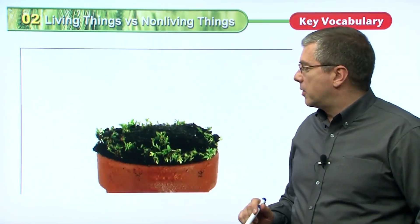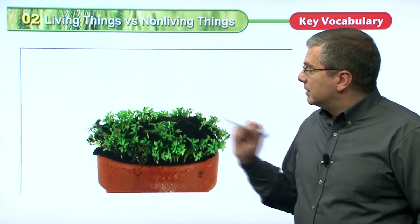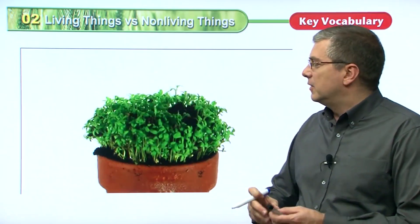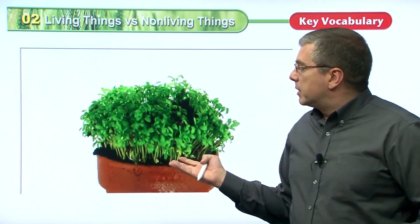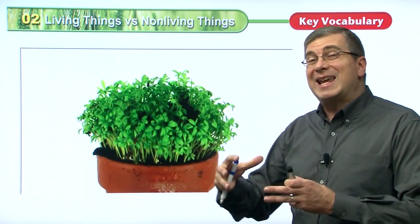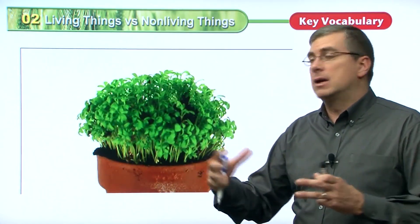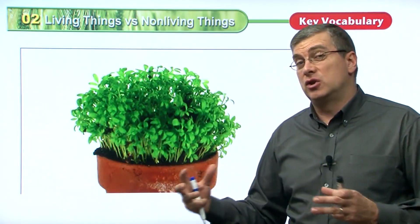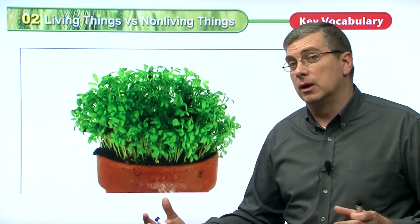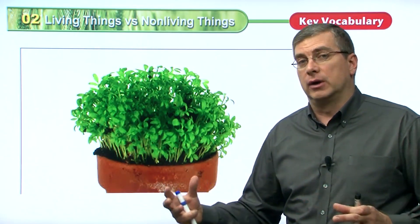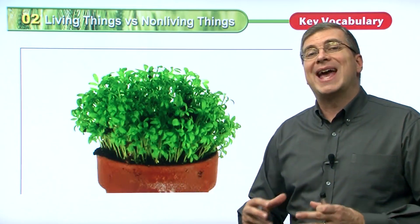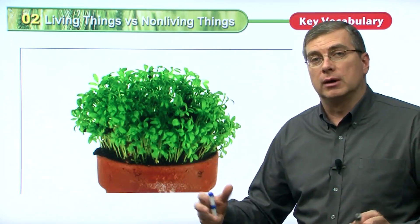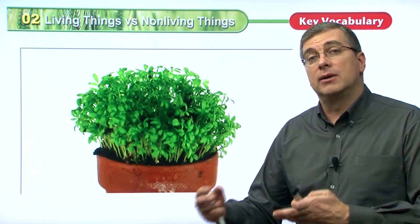Let's take a look at these plants planted in this pot and how they grow. They're growing very quickly — of course this is time-lapse photography, taken over a long period of time. The plants are growing, getting bigger in size, and also getting older. When things grow, they get bigger and they get older, and this is part of the cycle of life.